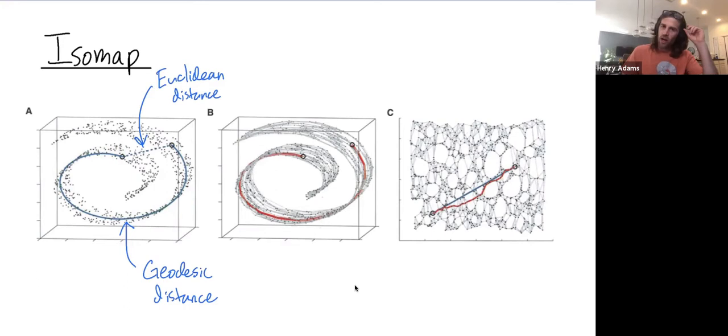In ISOMAP, the way that you approximate this geodesic distance is you build a network, a graph on top of your data points. There's two common ways to do that. Either take each data point and connect it to each of its k nearest neighbors, where you pick some value of k, maybe k is equal to 5 or 7.